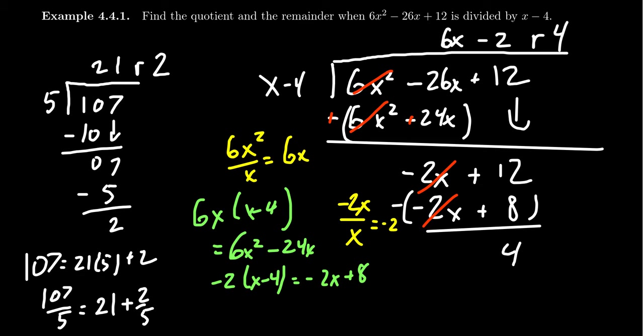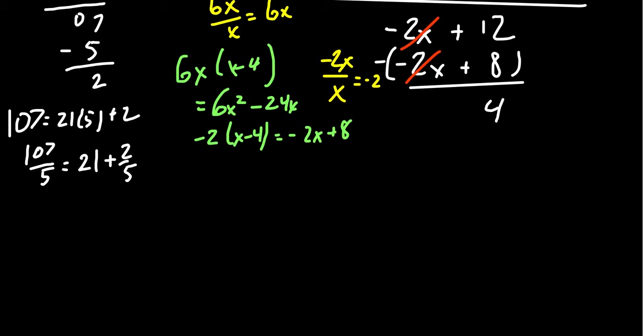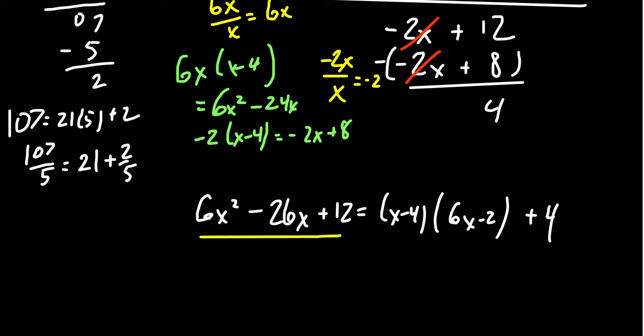And so keeping track of things, our quotient is then 6x - 2. And our remainder is then the number 4. The remainder should always have as its degree something smaller than the divisor. Our divisor was a linear polynomial, it has degree 1. So the only thing smaller than that would be a degree 0 polynomial, which is a constant like we see right here. And so then gathering this information together, we can say that 6x² - 26x + 12 factors in the following way: we're going to have (x - 4) times (6x - 2), and then plus 4 right here. And so what we see: we see the original dividend, aka the numerator, we see the divisor, aka the denominator, here we see the quotient 6x - 2, and then we see the remainder here.